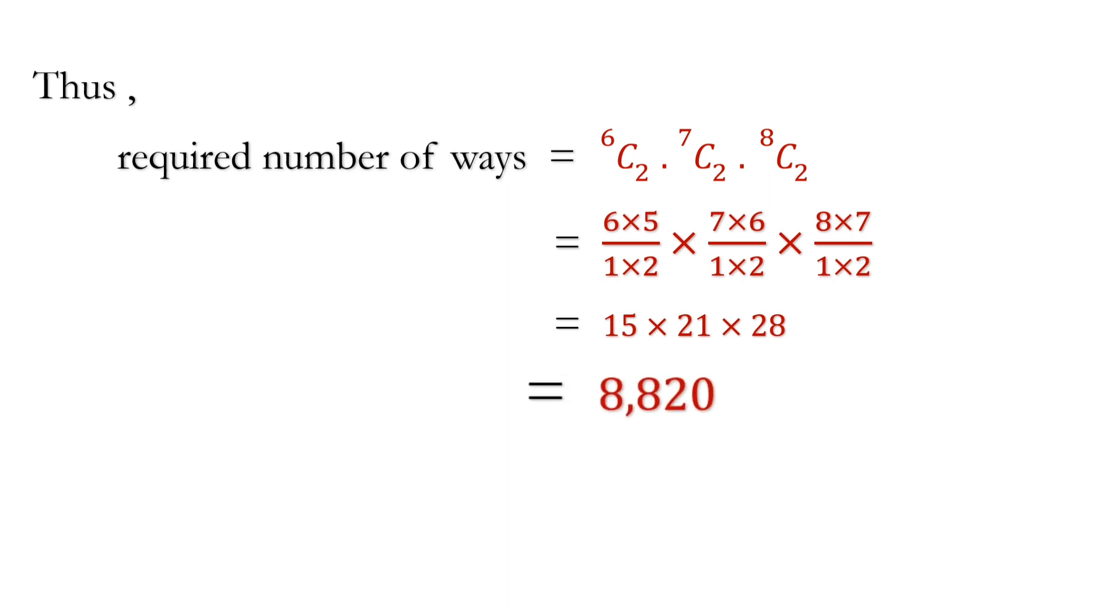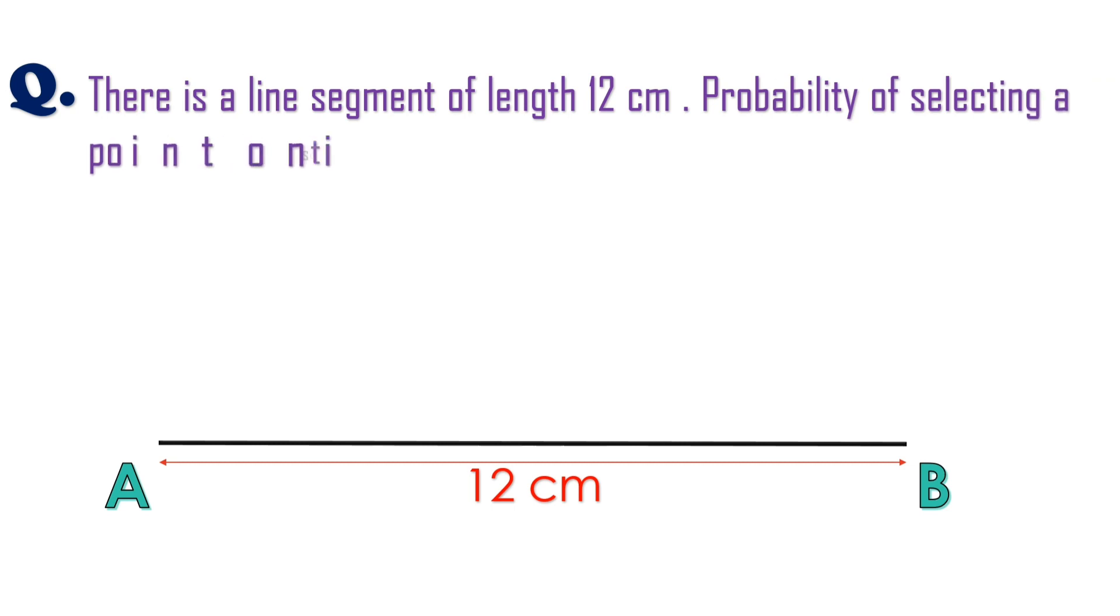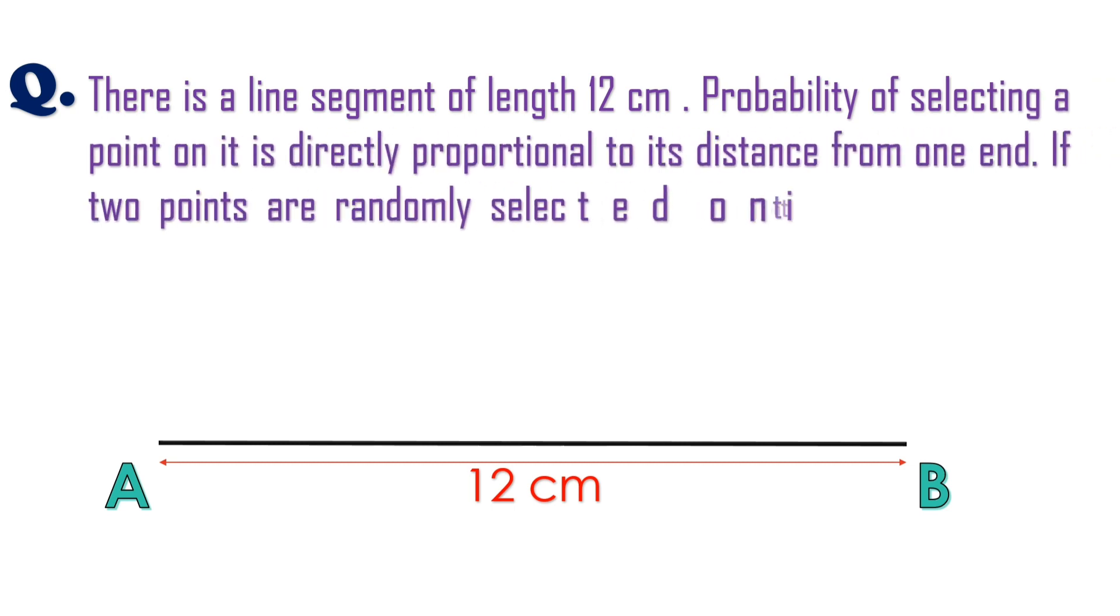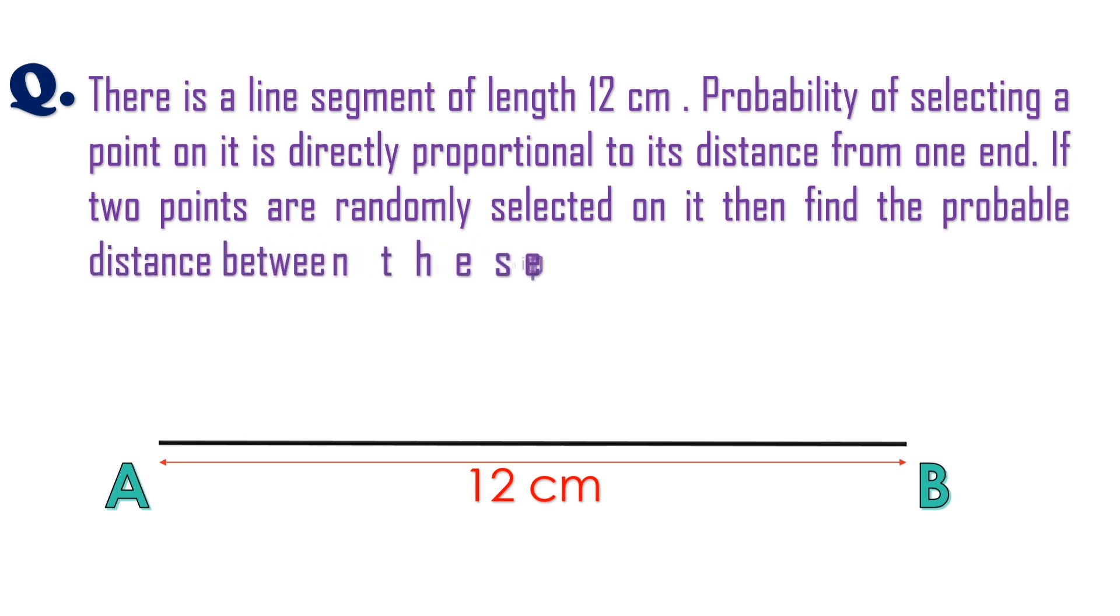Let's move toward another question. There is a line segment of length 12 cm. Probability of selecting a point on it is directly proportional to its distance from one end. If two points are randomly selected on it then find the probable distance between these points.